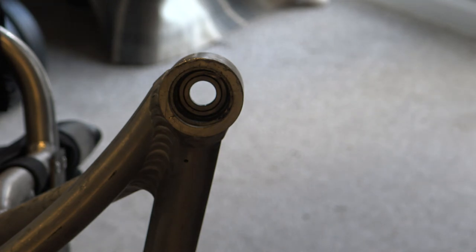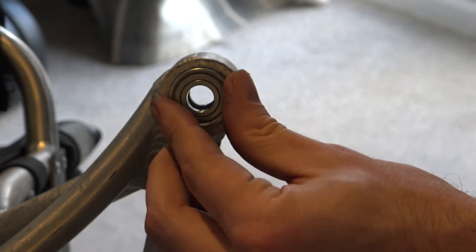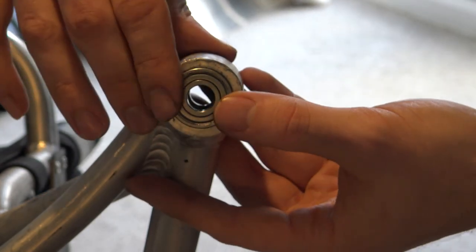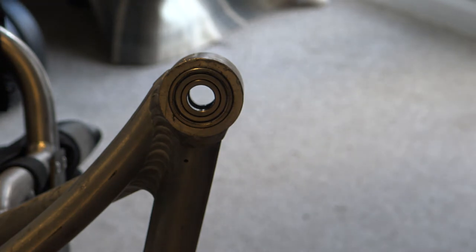Once it's clean, I take my new bearing and just angle it just right. I try to get it as far as I can with just my fingers, and then I use my mallet once more.